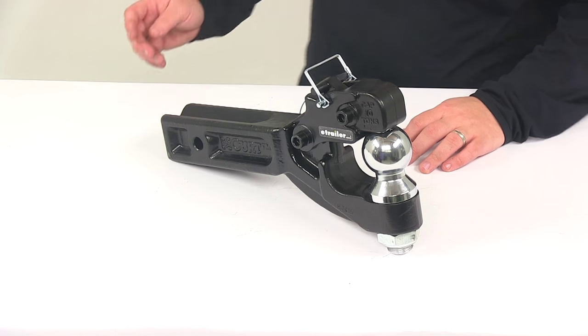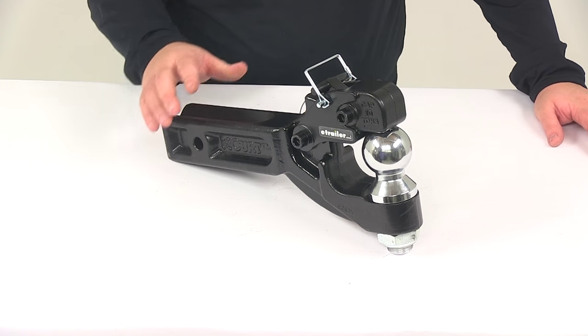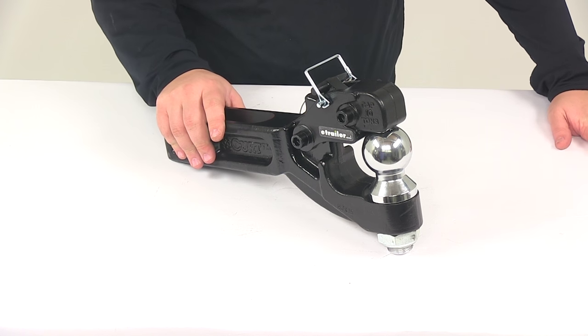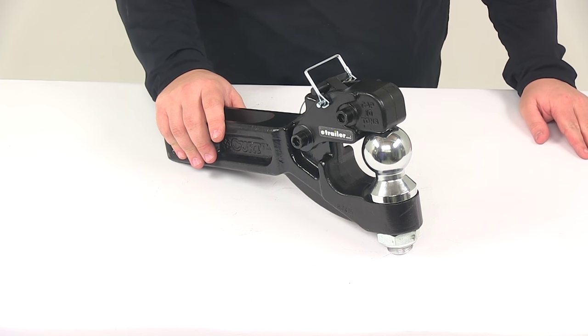Today we're going to be taking a look at the Curt pintle hook with a 2 and 5/16 inch ball. The pintle hook and hitch ball combo is going to let you hook up your trailer to your tow vehicle.